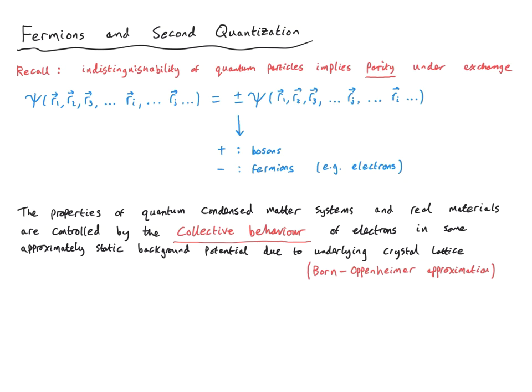Now, the physical properties of quantum condensed matter systems and real materials are often controlled by the collective behavior of electrons in some approximately static background potential due to the underlying crystal lattice structure, the atomic orbitals, the nuclei, and so on. This is referred to as the Born-Oppenheimer approximation. Of course, this is an approximation, and there are also effects coming from the coupling of electrons to the lattice vibrations, or the phonon modes, but we won't consider that in this course. Here, we'll just focus on the dynamics of the electronic system moving in this approximately static background potential from the lattice. This is often enough to capture the most important or dominant physical effects in a real system.